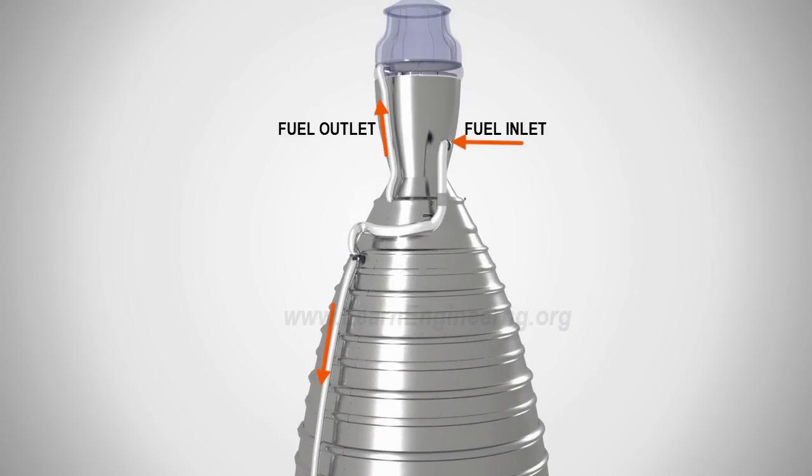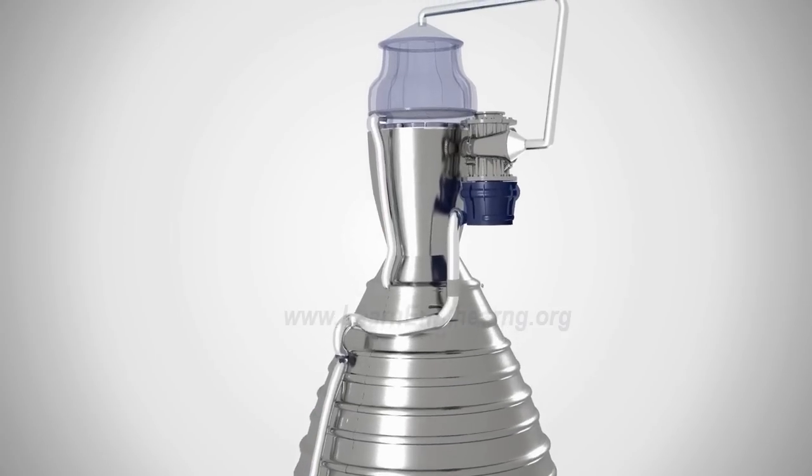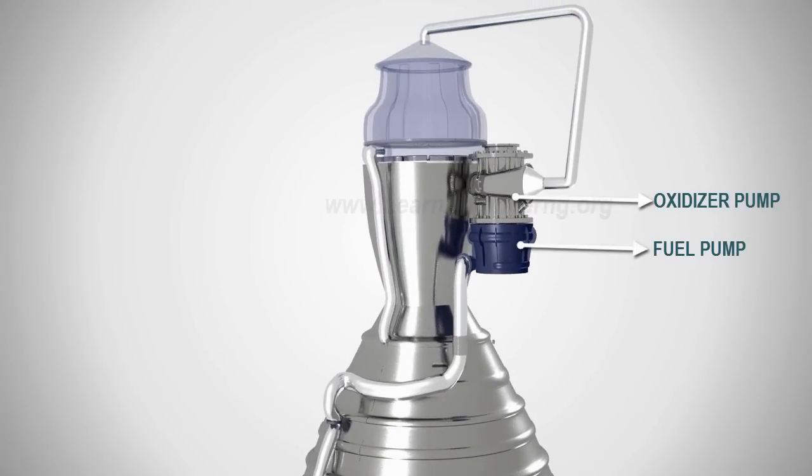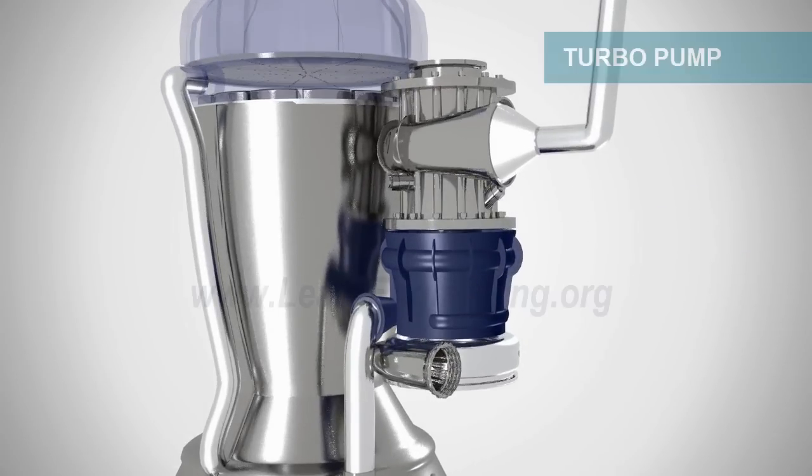To pump the fuel and oxidizer at an adequate flow rate, two pumps are used. These pumps are driven by a turbine, which is connected to the same shaft as the pumps. The pump turbine unit is referred to as a turbo pump.